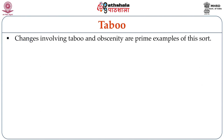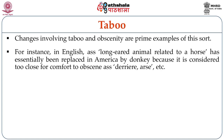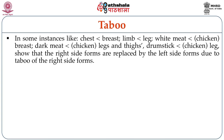Lexical replacements involve more than meaning shifts, although change in meaning may also be involved. Changes involving taboo and obscenity are prime examples. For instance, in English a long-eared animal related to a horse has essentially been replaced in America by 'donkey' because it is considered too close for comfort to an obscene word. In some instances: 'chest' which is close to another name for 'breast'; 'limb' for 'leg'; 'white meat' for chicken breast; 'dark meat' from chicken legs and thighs; 'drumstick' from chicken legs — all show that right-side forms are replaced by left-side forms due to taboo.